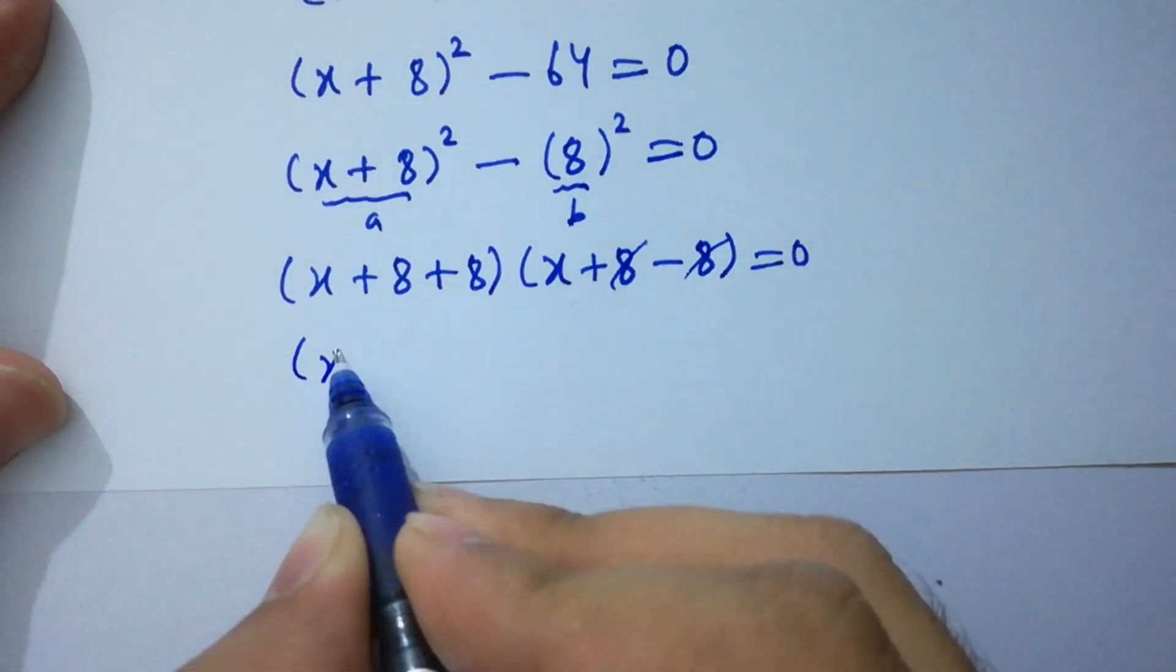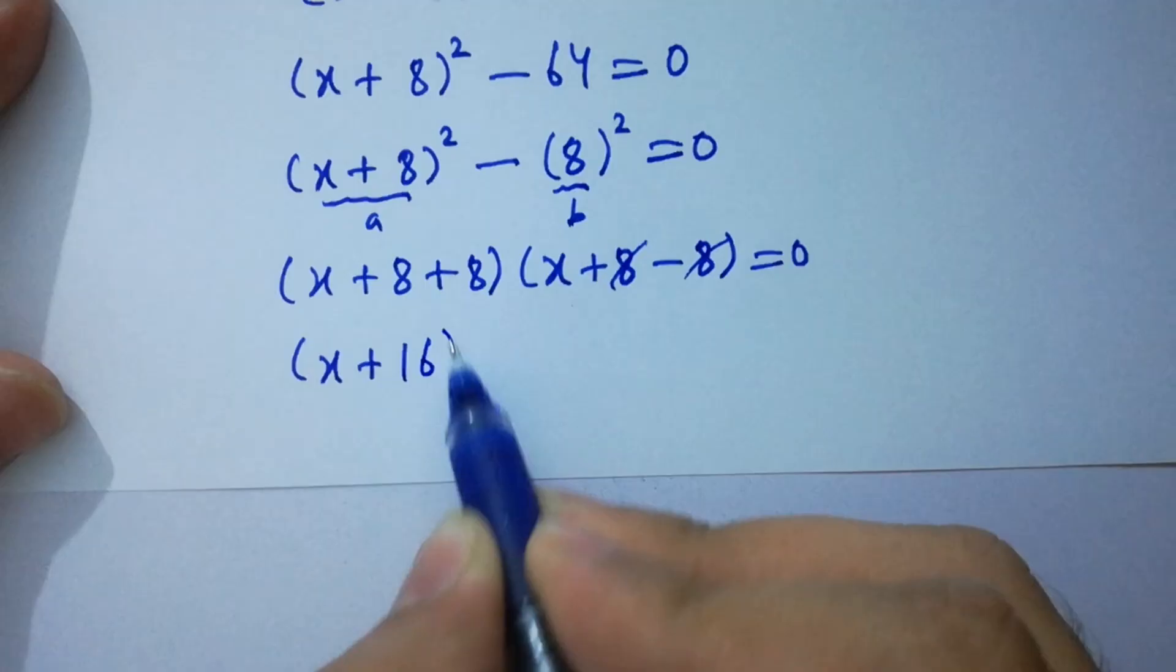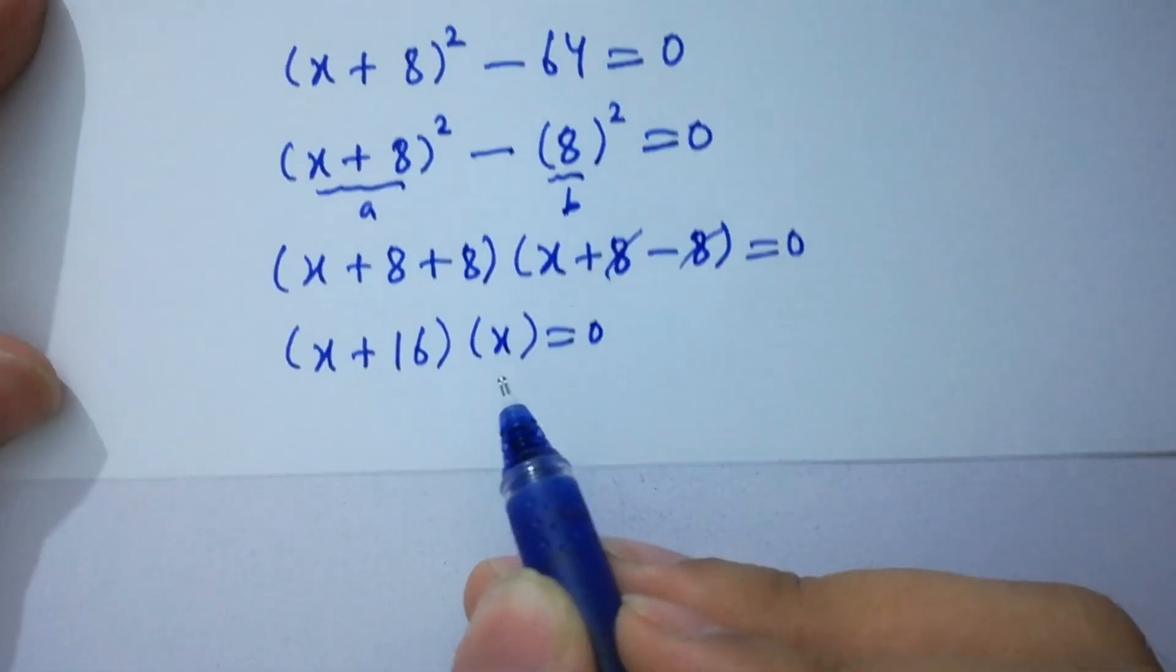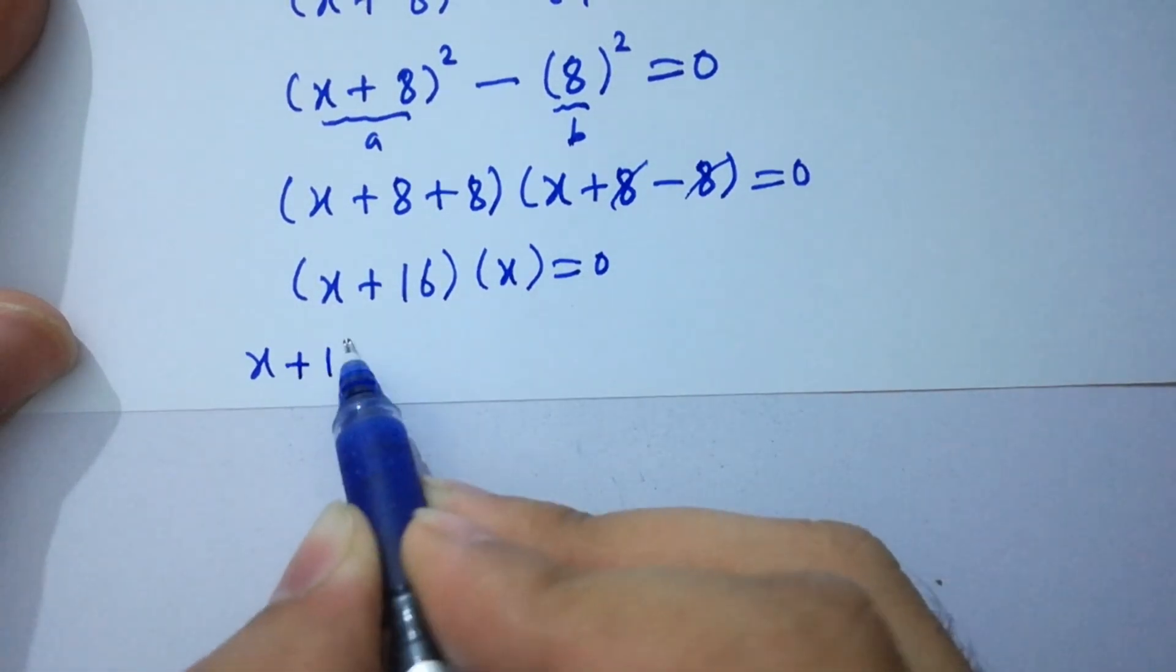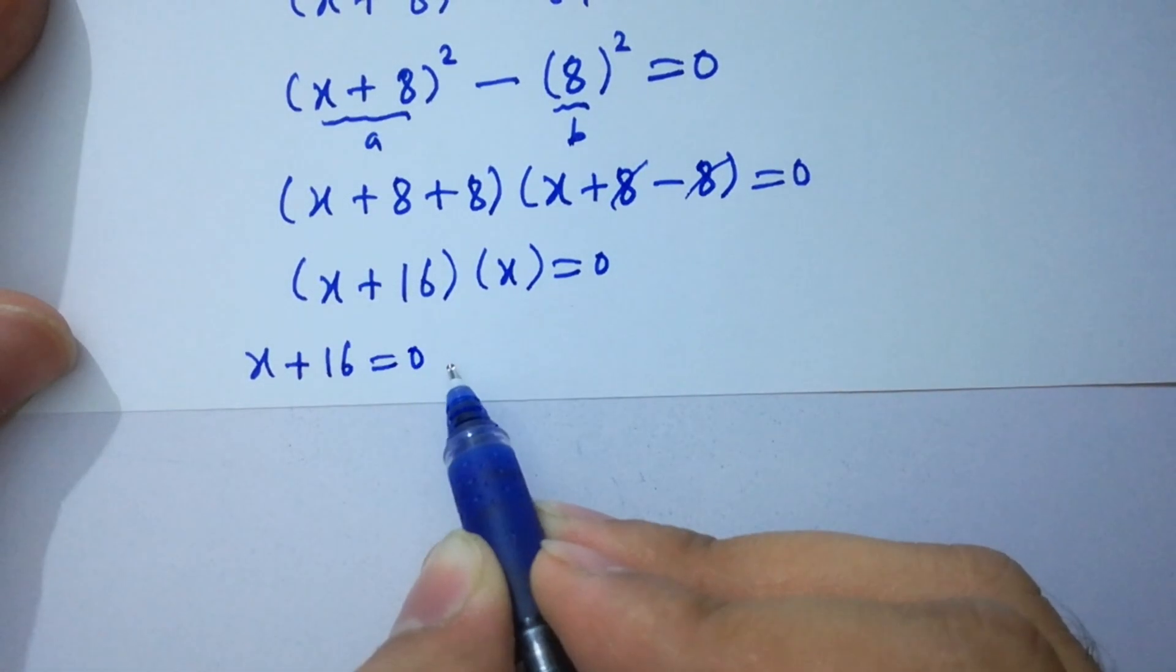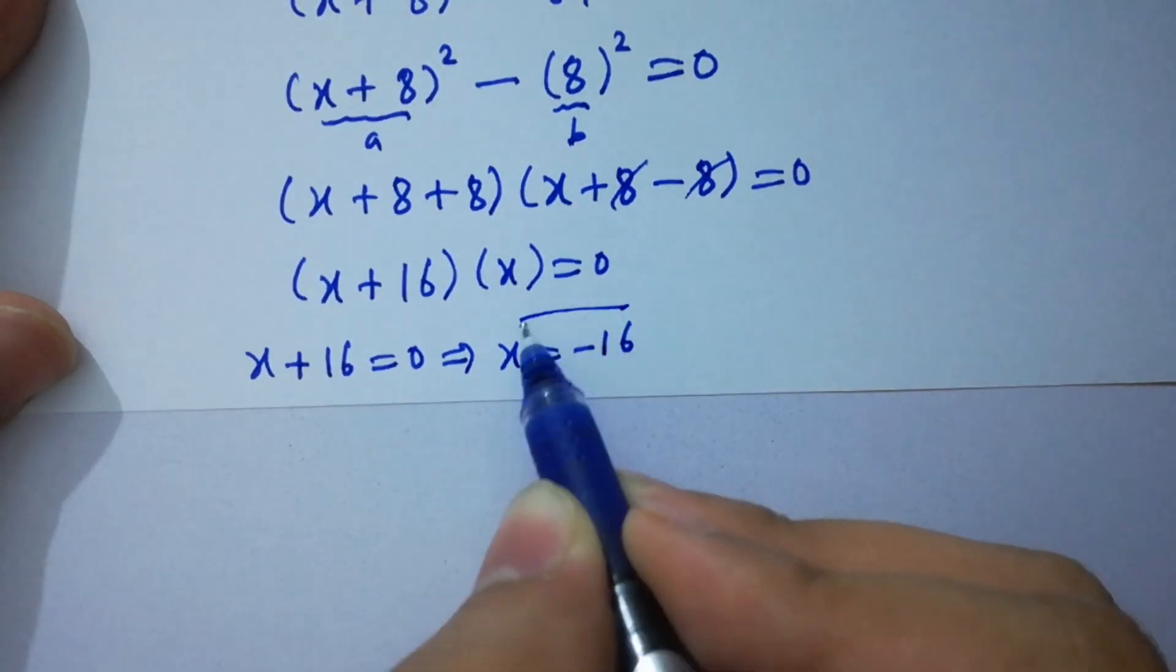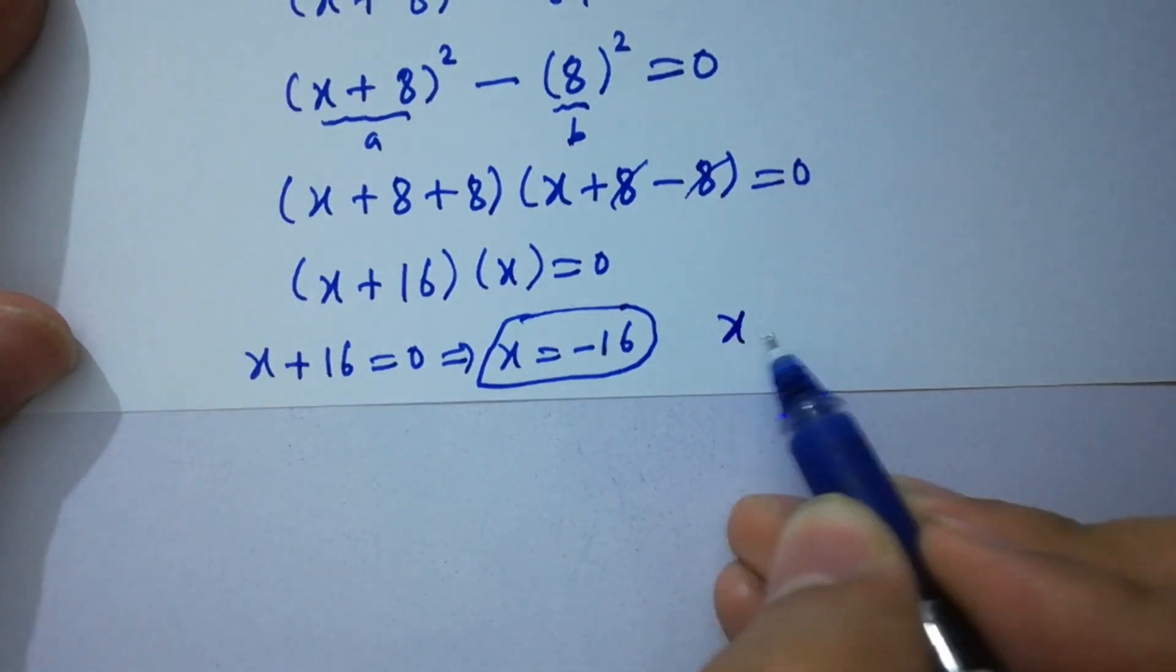This gives us (x + 16)(x) = 0. Then we have x = -16 or x = 0.